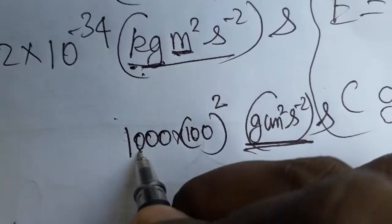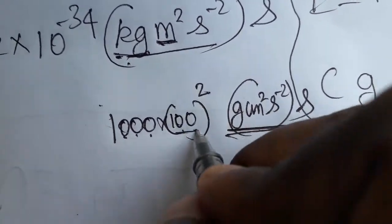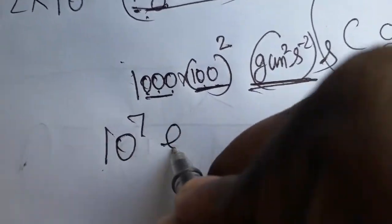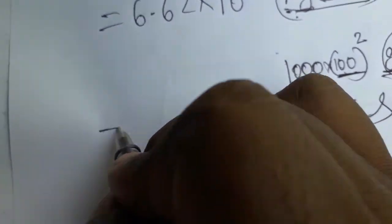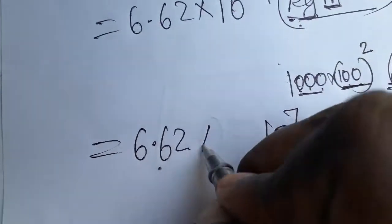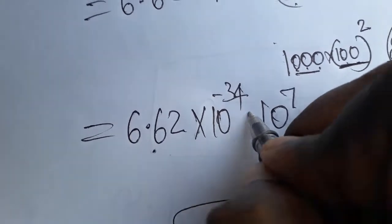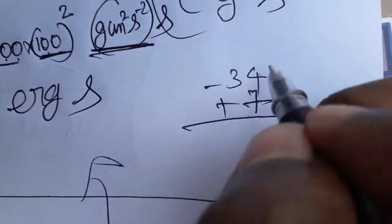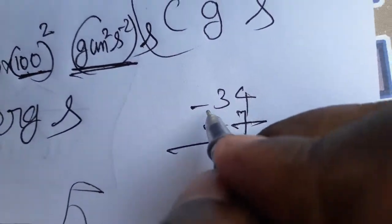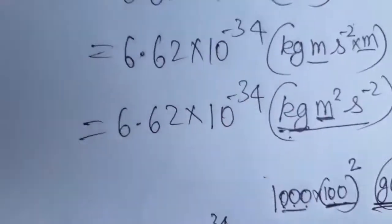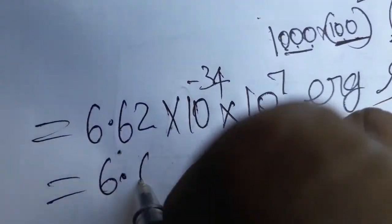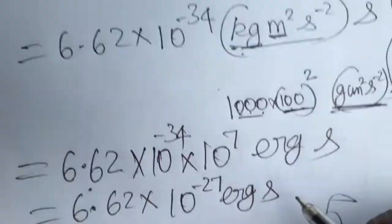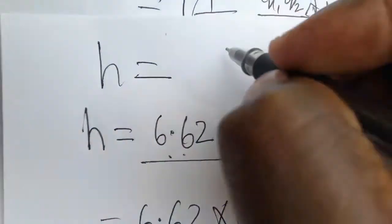Counting the conversion factors: 10³ from kg to g and 10⁴ from m² to cm² gives 10⁷ erg. So the exponent becomes minus 34 plus 7, which equals minus 27. The final answer is h equals 6.62 into 10 power minus 27 erg second in the CGS system.